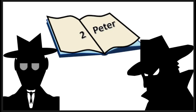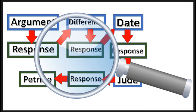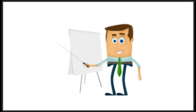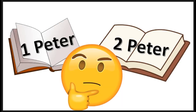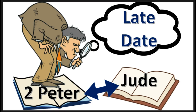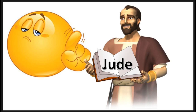2 Peter is the book that the skeptics find most vulnerable to criticism. I will give you a quick overview of the case made by the critics. They will say that 2 Peter was not written by the Apostle Peter because there are differences between 1 Peter and 2 Peter, and information in 2 Peter points to a much later date. Also, 2 Peter is connected to Jude, and Jude is written at a much later date. Finally, as Jude would be a contemporary of the Apostle Peter, they will challenge the authorship of the book of Jude.